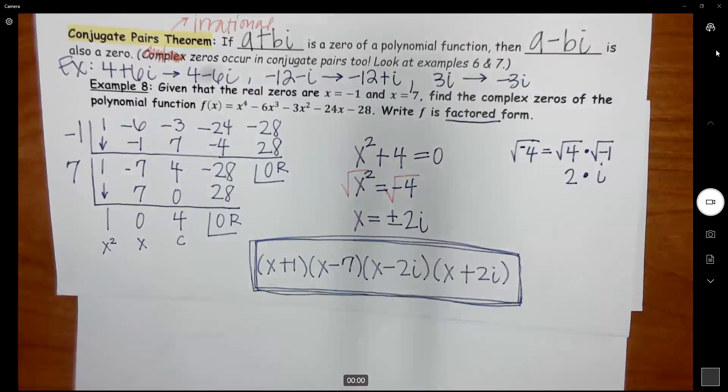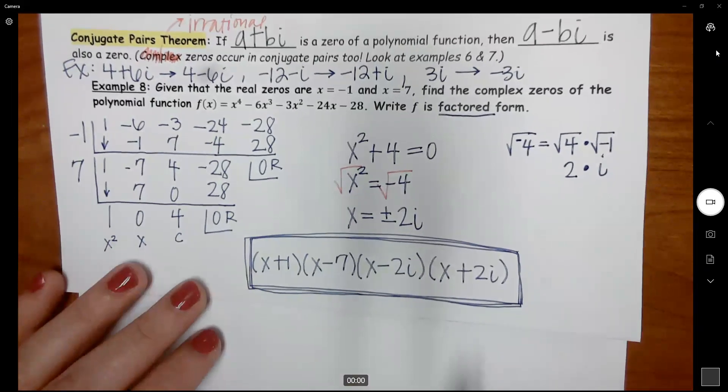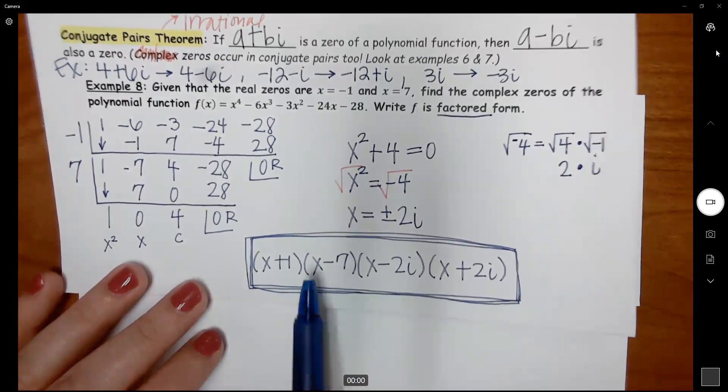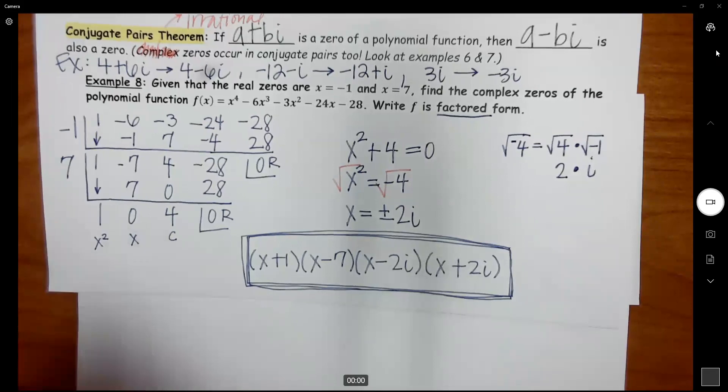These last examples are just algebra, simple sign. What they're going to do is they're going to give us our real zeros and one of the irrational or complex zeros, and we have to know that we get the other one.